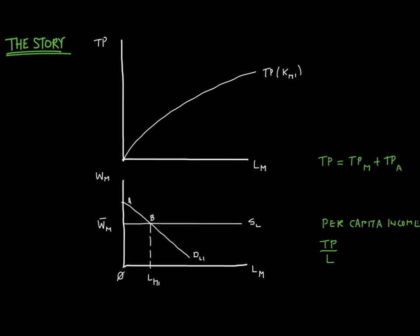Here we have the basic outline of the story, looking at the modern industry. We have the total product curve for the modern industry, and we have the demand and supply for labor, which is how the real wage is determined. The demand for labor — equal to the marginal product of labor in the modern industry — is given by the downward-sloping curve. The supply of labor is perfectly elastic because workers are coming from the surplus labor in the agricultural sector. The total product produced in the agricultural sector is just added to the total product for the entire economy.